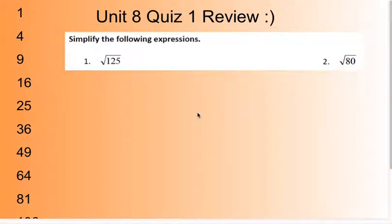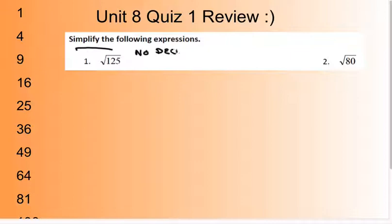Okay ladies and gentlemen of algebra, this is Unit 8 Quiz 1 Review. We're looking at everything having to do with rationals. When simplifying rational expressions, simplify does not mean decimals — no decimals. You've got to have either whole numbers if it's a perfect square, or a number on the outside and a number underneath.